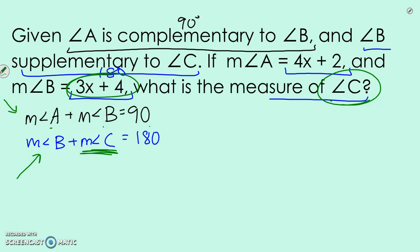We know that A is 4x plus 2. So 4x plus 2, and B, 3x plus 4, A and B are complementary, so they add to 90 degrees. Now we have this, we can use this equation to solve for x.